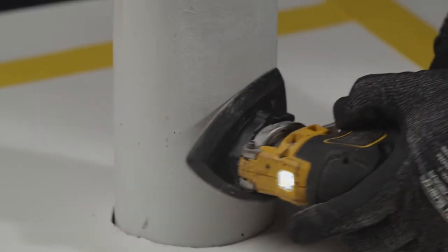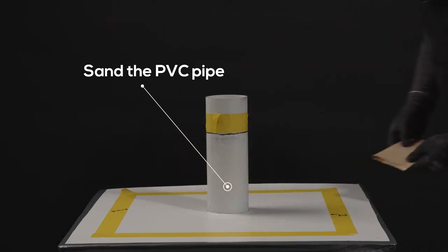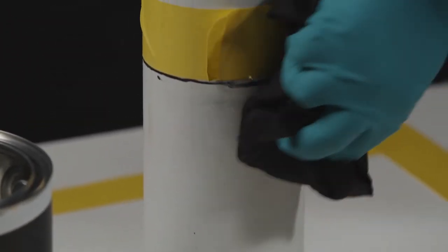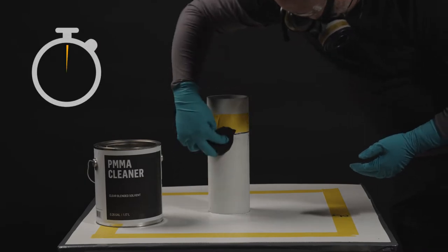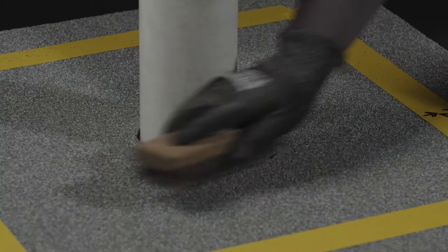Lightly sand the PVC pipe with the sandpaper to create a rough surface. Apply PMMA cleaner on a clean rod and clean the pipe section to be covered. Allow PMMA cleaner 15 to 20 minutes to completely evaporate prior to applying the PMMA flashing resin.